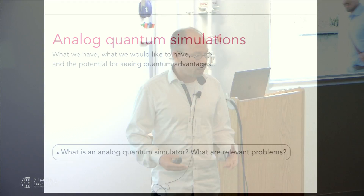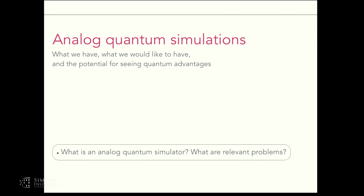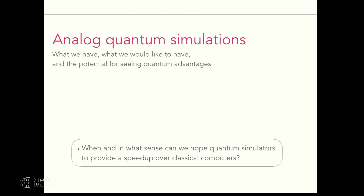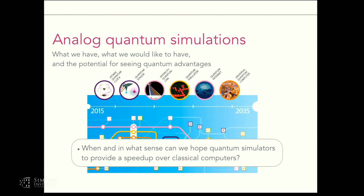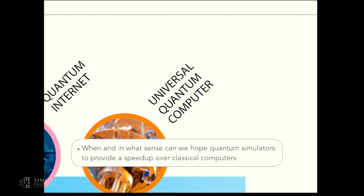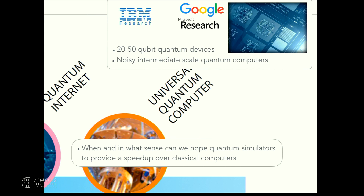I will obviously not be comprehensive, so I will ask lots of questions throughout this talk. Like, what is an analog quantum simulator in the first place? What are relevant problems, and when and in what sense can we hope for quantum simulators to provide some kind of computational speedup over classical computers? For full fault-tolerant quantum computers, the speedup issue may be out of question, as they could presumably solve some NP problems in polynomial time. We're witnessing very exciting activities towards building such devices — like superconducting qubit devices up to 50 qubits.